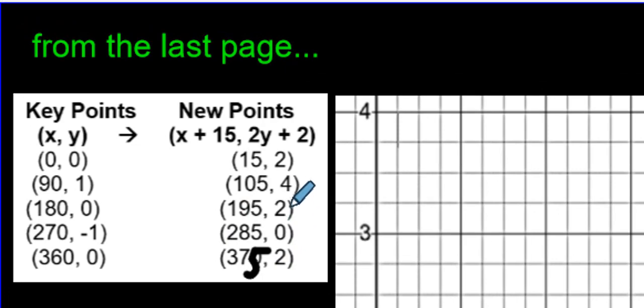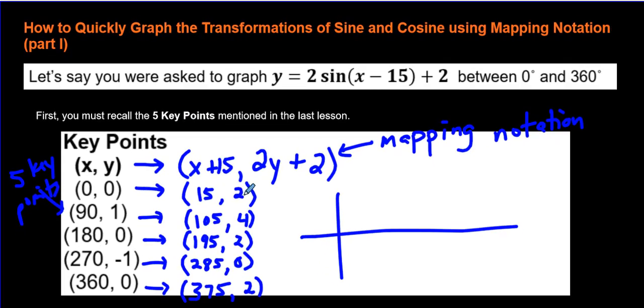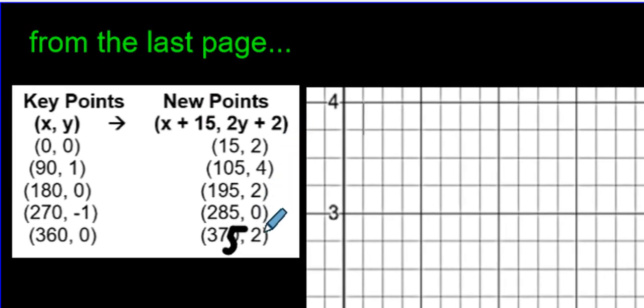What about the Y values? Are they the same or not? 2, 4, 2, 0, 2. 2, 4, 2, 0, 2. Okay. I think we're good to go now. We're ready for liftoff. Here we go.